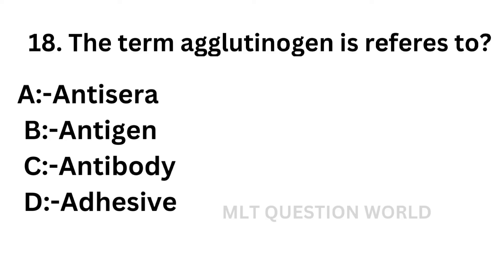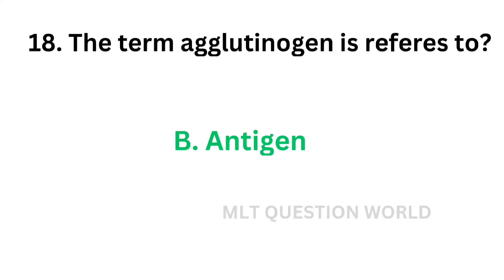Question number 18: The term agglutinogen refers to — option A: Antisera, option B: Antigen, option C: Antibody, option D: Adhesive. The correct answer is option B, Antigen. Antigen is also known as agglutinogen.